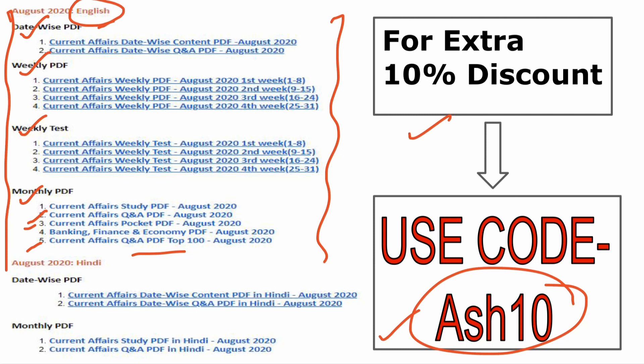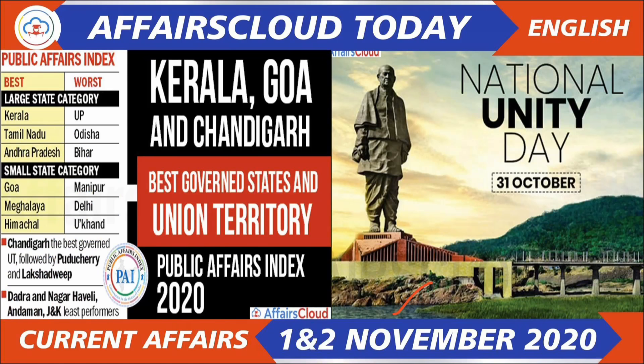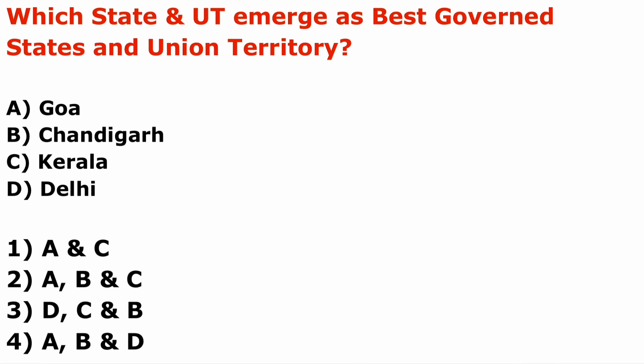Today's first question: which state and UT emerged as the best governed state and union territory? Give me the answer within five seconds. The answer is the second option — A, B, and C.